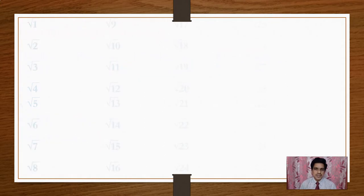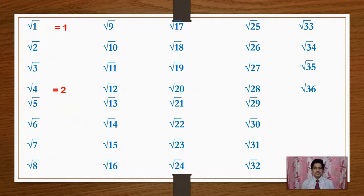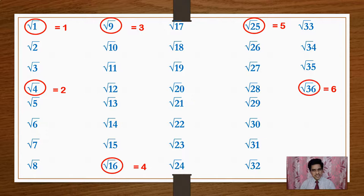Look at numbers with square roots. I have written from root 1 to root 36. Root 1 is 1, root 4 is 2, root 9 is 3, root 16 is 4, root 25 is 5, and root 36 is 6. These are perfect squares and we have exact square roots for them. These numbers are actually Rational Numbers because we know their values exactly.